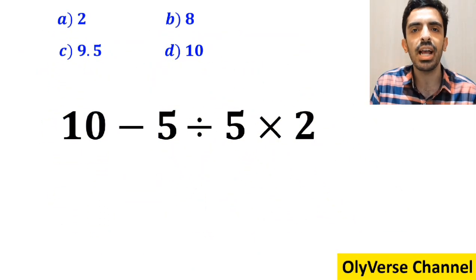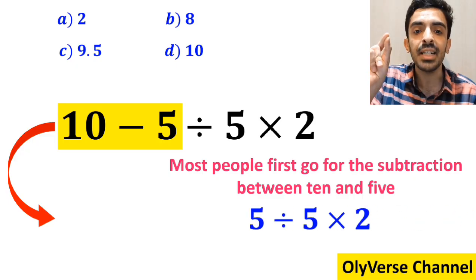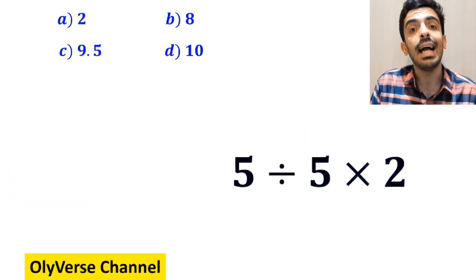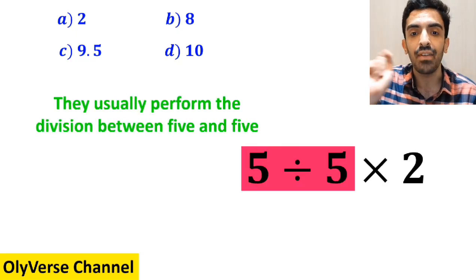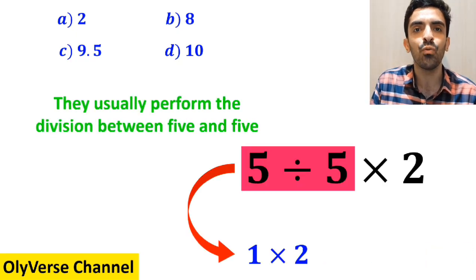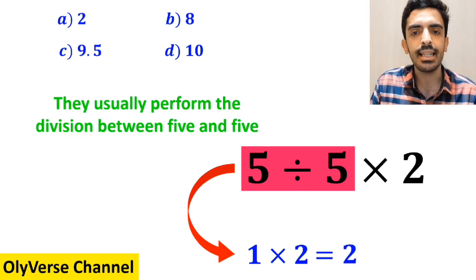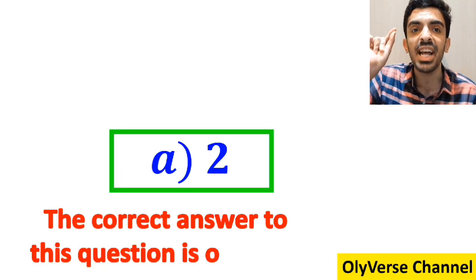To solve this question, most people first go for the subtraction between 10 and 5, and they rewrite this expression as 5 divided by 5 then times 2. And the next step, they usually perform the division between 5 and 5, and simplifying this expression to 1 multiplied by 2, which finally gives them the answer 2. And immediately, they quickly say that the correct answer to this question is option A.